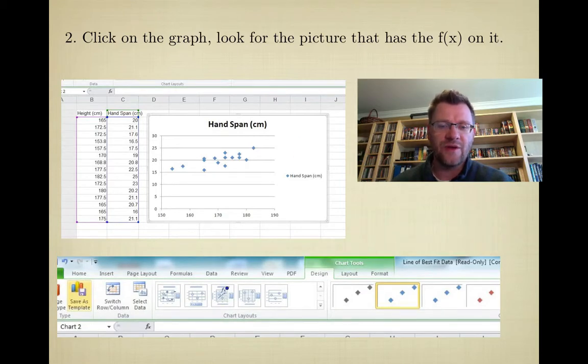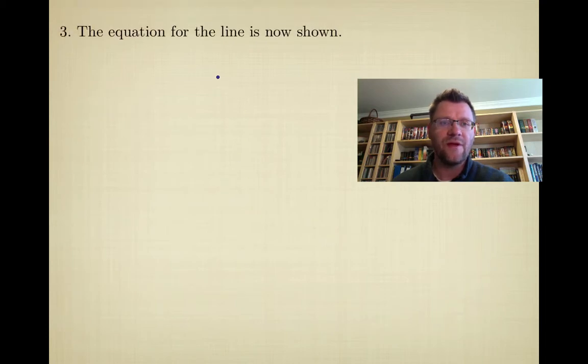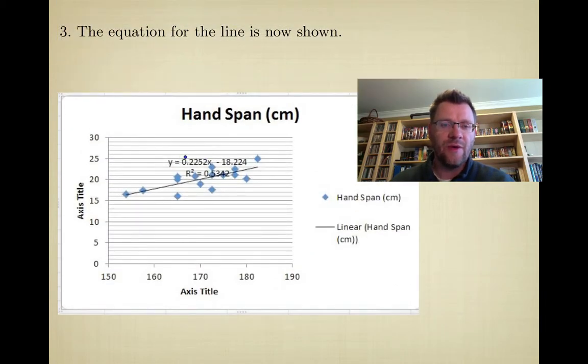You want to look for the picture—after you highlight it you'll see Chart Tools come up—you want to look for this picture right here that has f(x) on it. You may have to scroll up and down, but find that picture that has f(x) on it. After you've done that, this will come up and you can see that the equation for that line is now shown right on top of your data. You can see it even drew the line for you—that's what is considered the line of best fit.